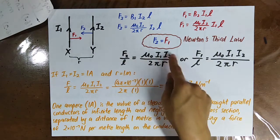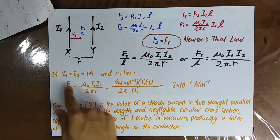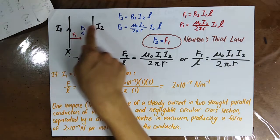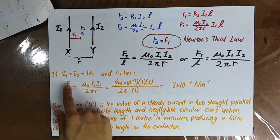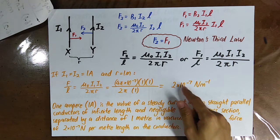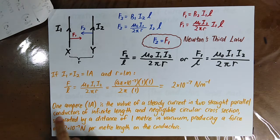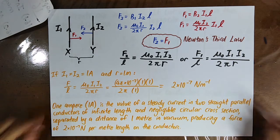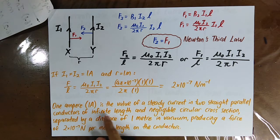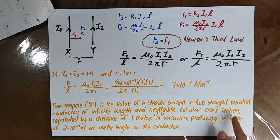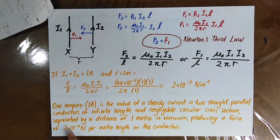The force per unit length is given by F/L = μ₀I₁I₂ / (2πR). If the currents I1 and I2 are each 1 ampere and the distance between them is 1 meter, the magnetic force per unit length is 2 × 10⁻⁷ N/m. This gives the definition of 1 ampere: the steady current in two straight parallel conductors of infinite length, negligible cross-section, separated by 1 meter in vacuum, producing a magnetic force of 2 × 10⁻⁷ N/m on each conductor.